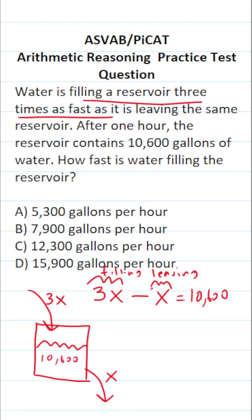What is 3X minus X? It's helpful to put a one in front of X. 3X minus X is 2X equals 10,600. Divide both sides by two now to get X by itself. This crosses out, leaving us with X.